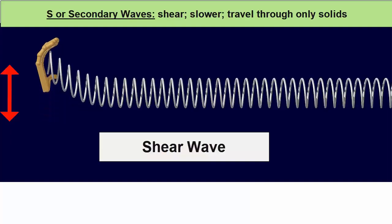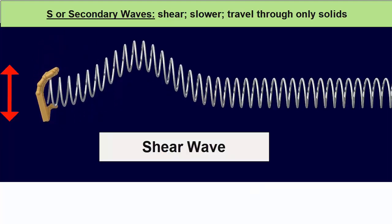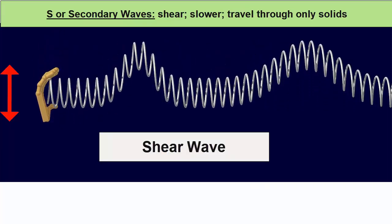S waves, on the other hand, are shear waves and can travel only through solids. When S waves travel into liquids, they disappear.